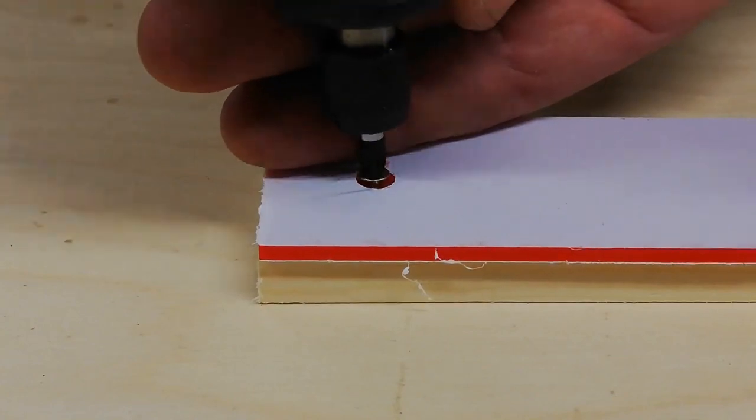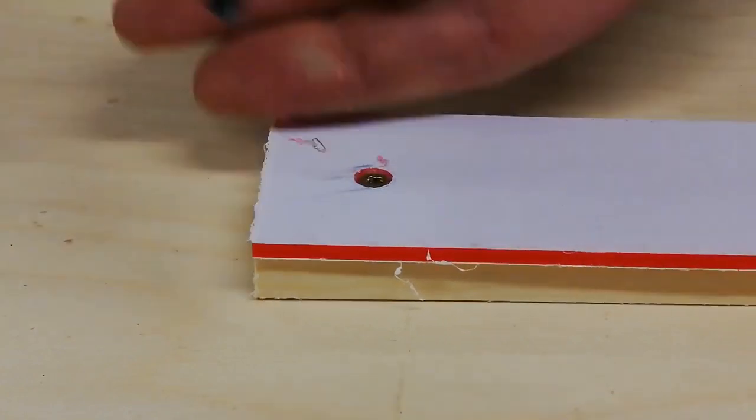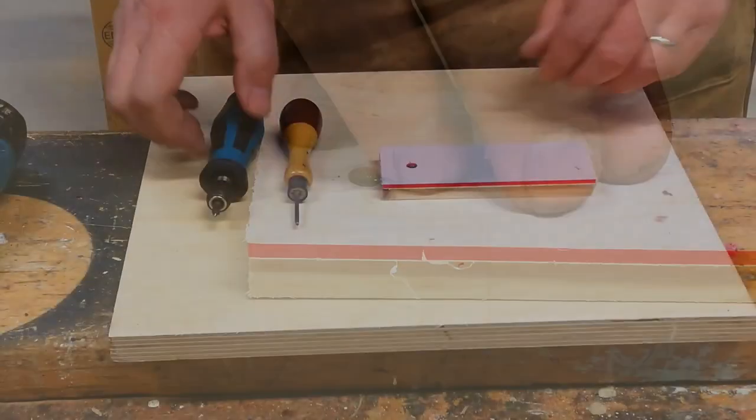Screw your screws into the timber through the acrylic so they're nice and level with the top of the acrylic. And that's your lot. Job done.